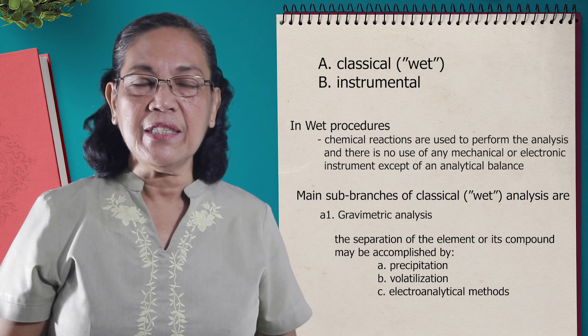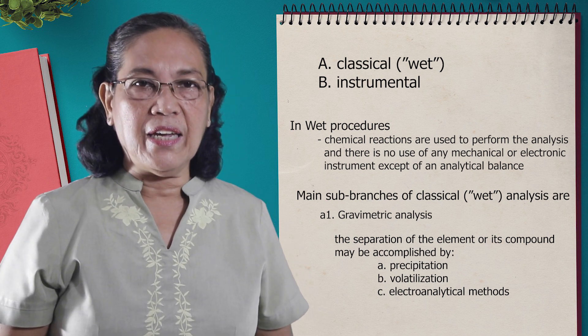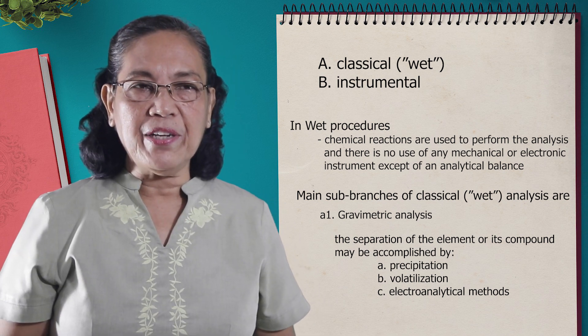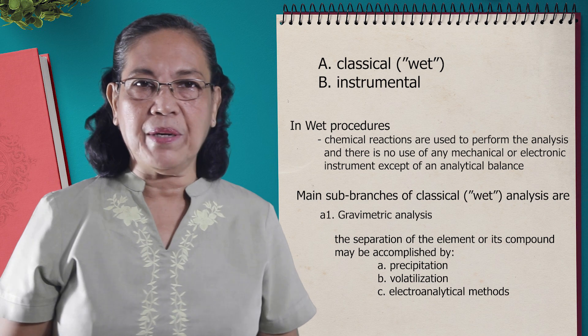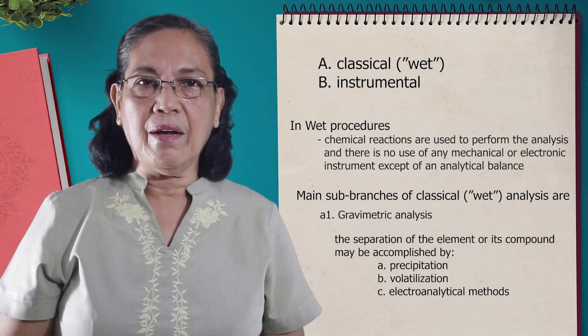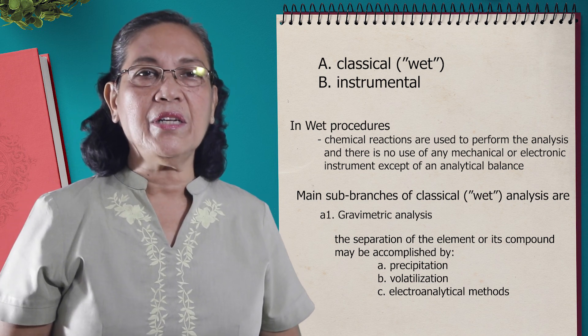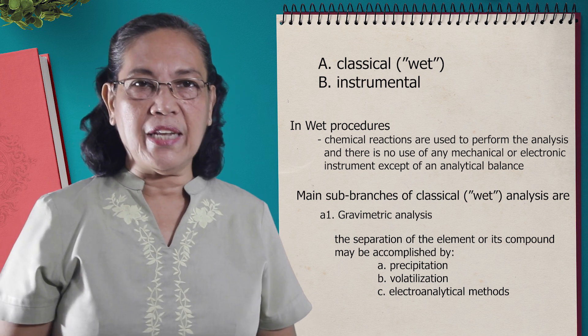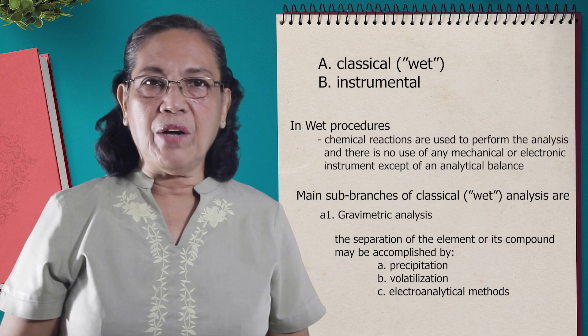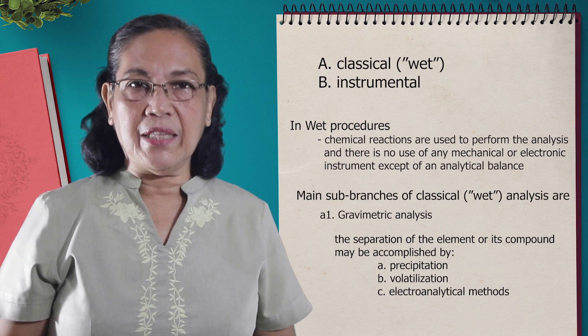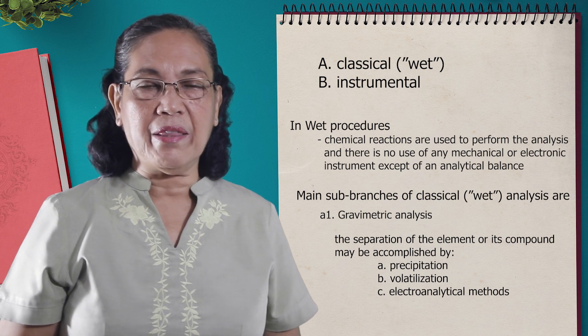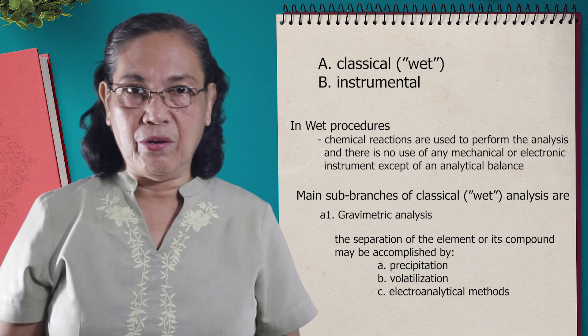The substance that we are trying to quantify is what we call the analyte. The separation of the element or a compound may be done by precipitation method, by volatilization method, or by electroanalytical method. Of the three methods that is used by gravimetric, it is the precipitation method that is commonly used.